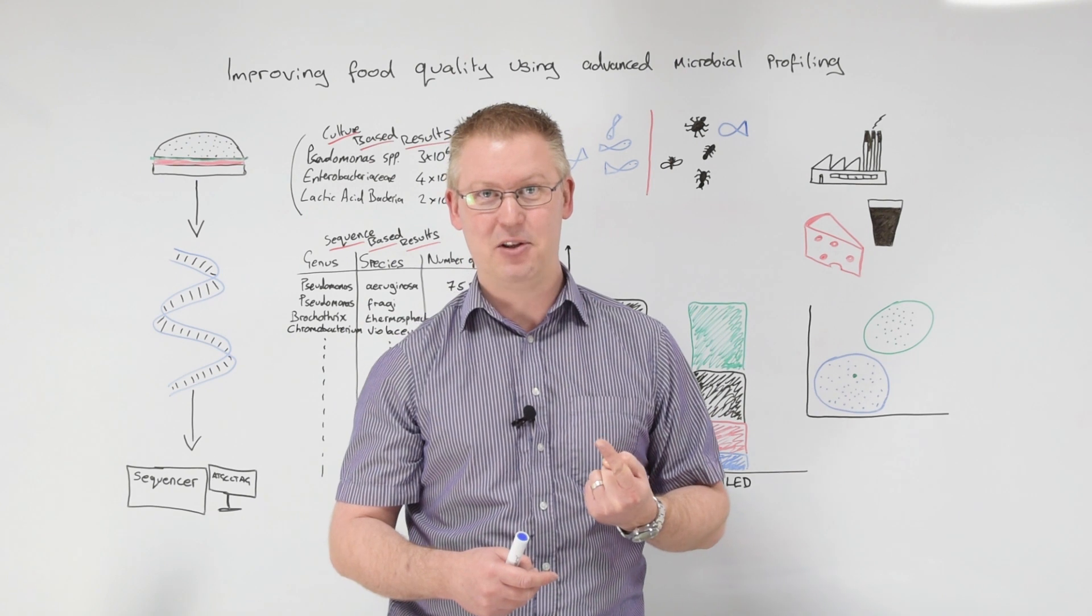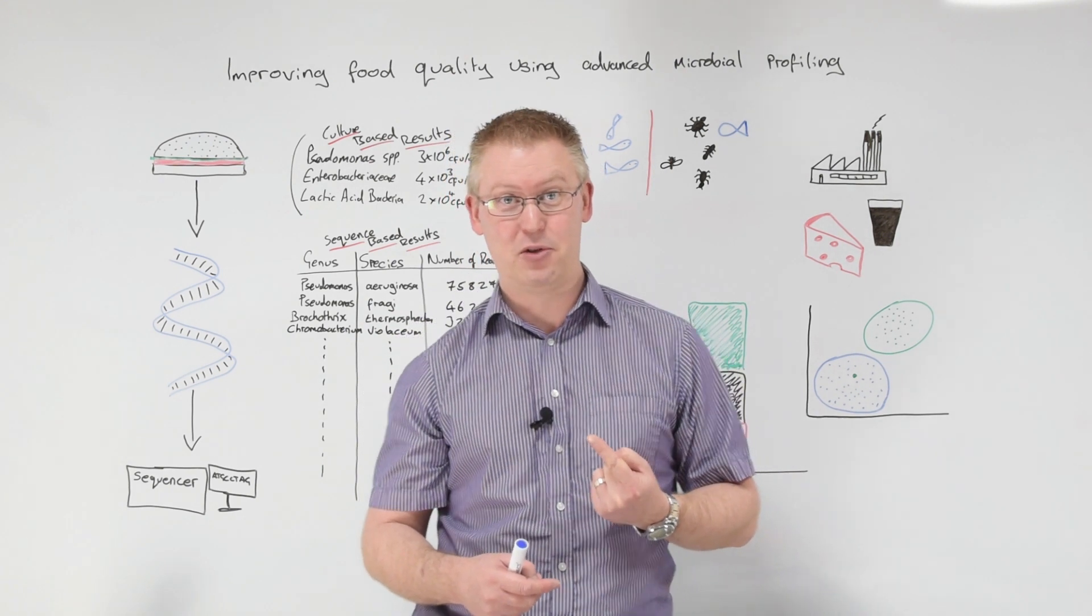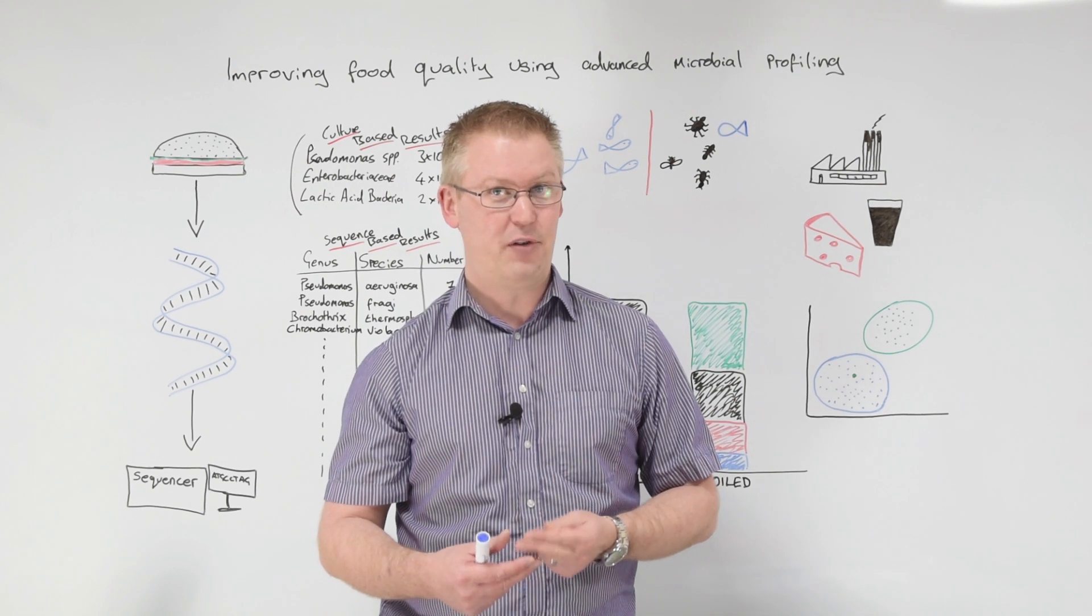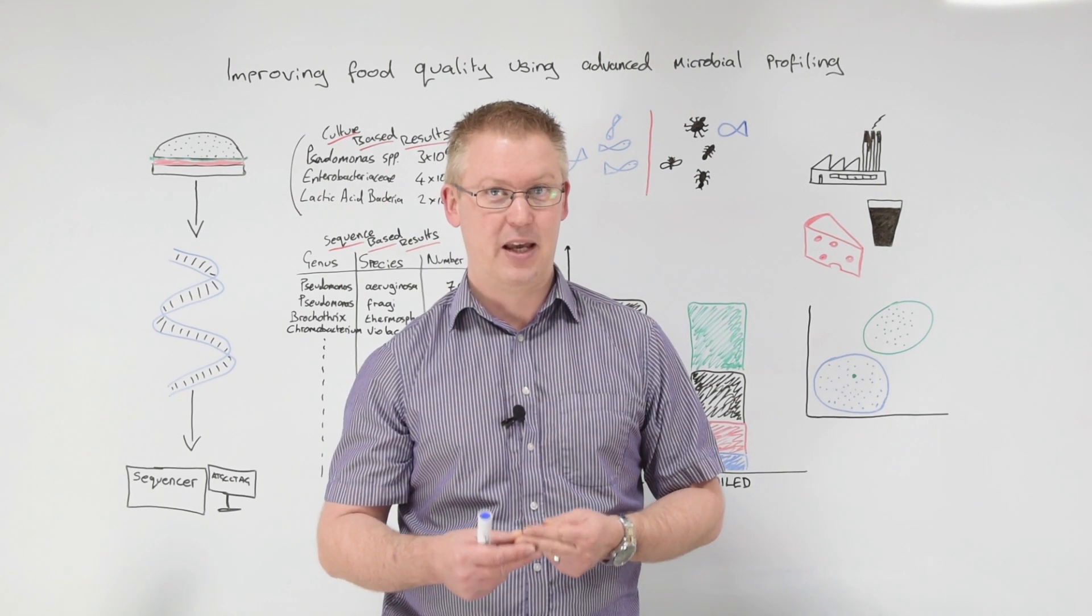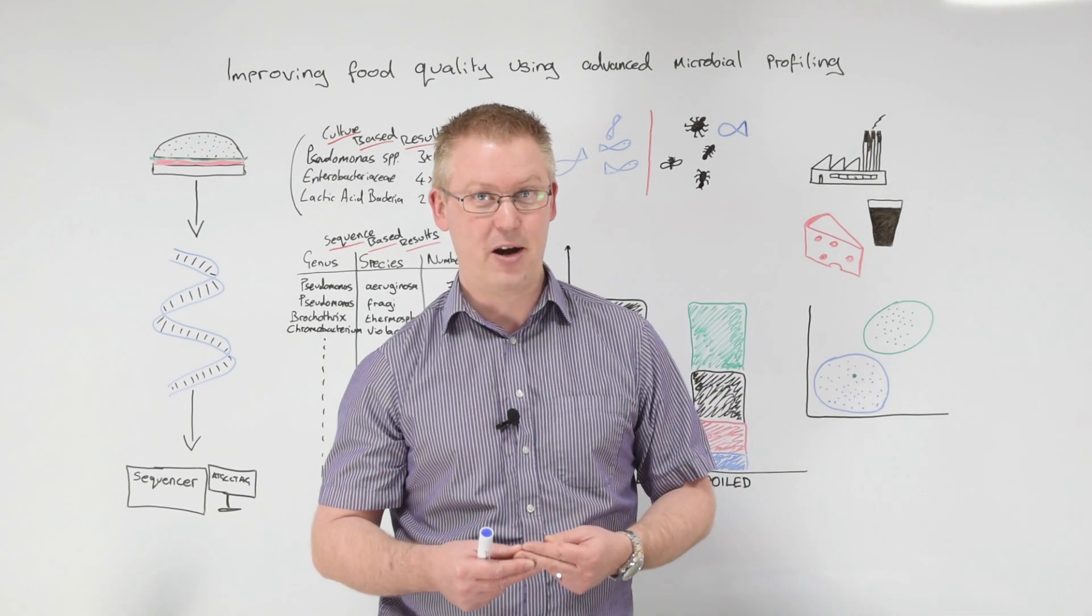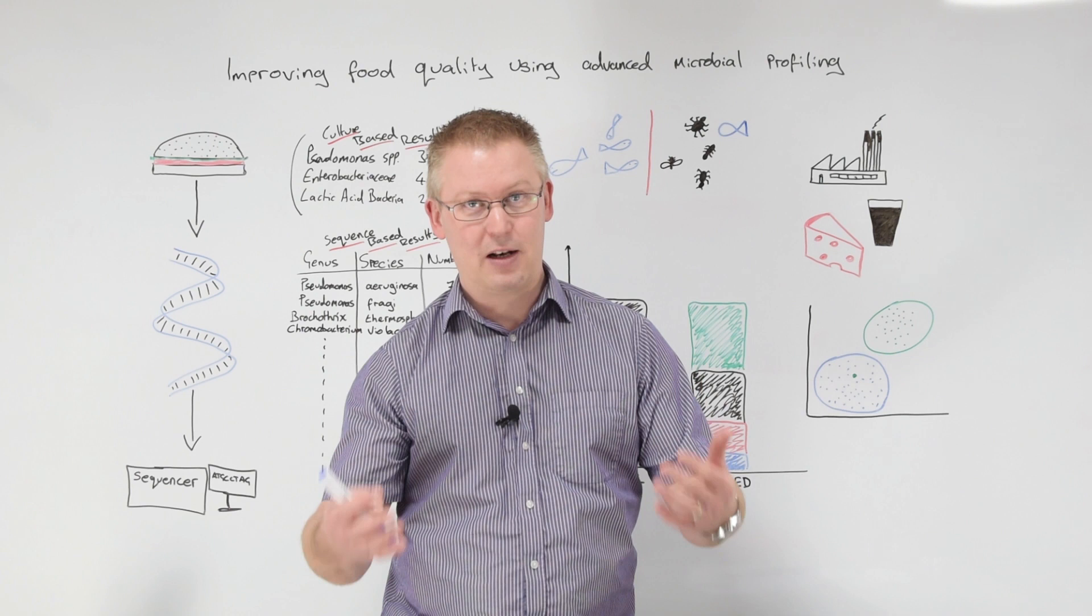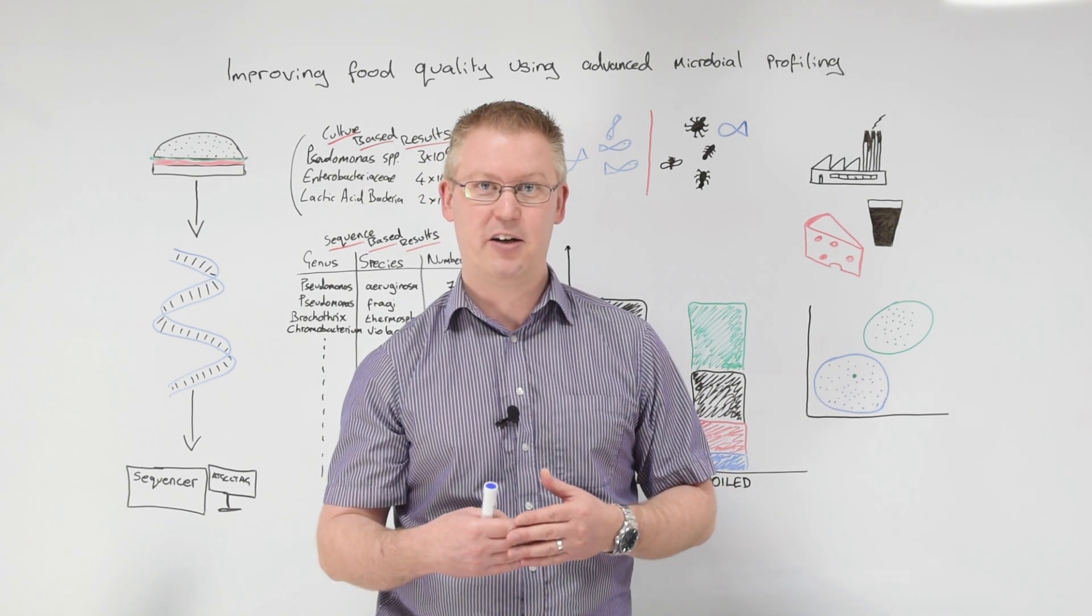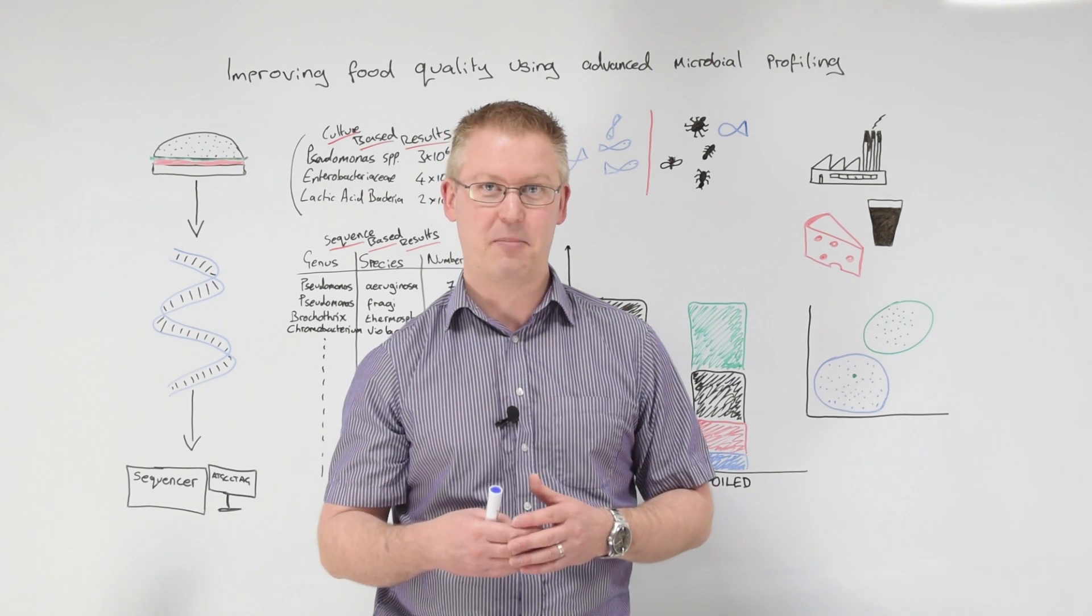One, it was likely to be the causative agent of the spoilage we saw because it produces pigments. And number two, it shouldn't have been there in the first place because it only grows in the presence of oxygen. And these packs were supposed to be oxygen free. So when the client got that information back, they could run an investigation on their packaging line. And lo and behold, they did find a fault with the packaging.